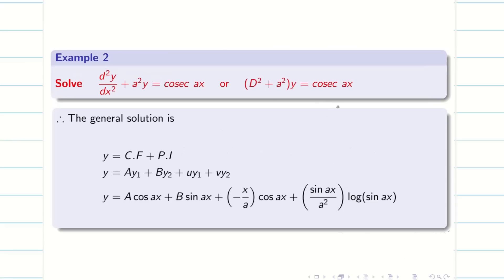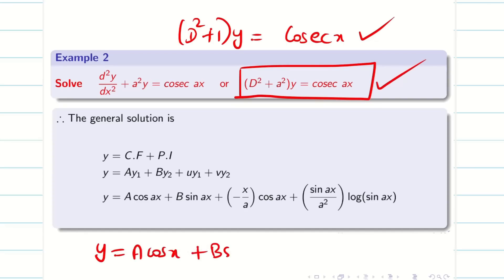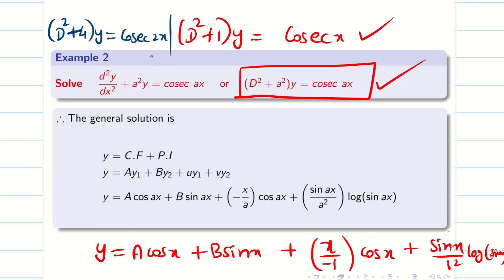Similarly, for cosecant x also. If they are asking d² + 1 into y cosecant x. Now, choice is yours. Suppose you are feeling that numbers is getting issue for you. You just solve the problem for the general assumption a and put a equal to 1. So, it will become A cos x + B sin x plus minus x cos x plus (sin x) log sin x. So, choice is yours. If you get d² + 4 into y is equal to cosecant 2x. Then, the better option and the best option is assuming this for a. Solve it and finally substitute a equal to 2.